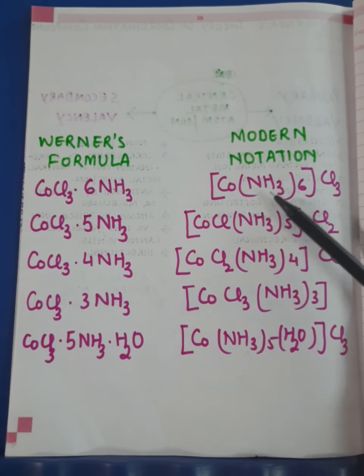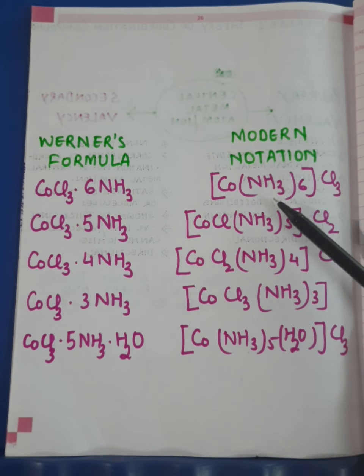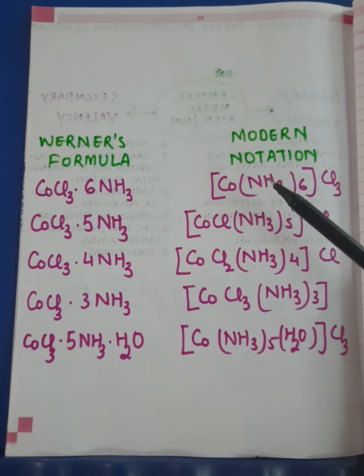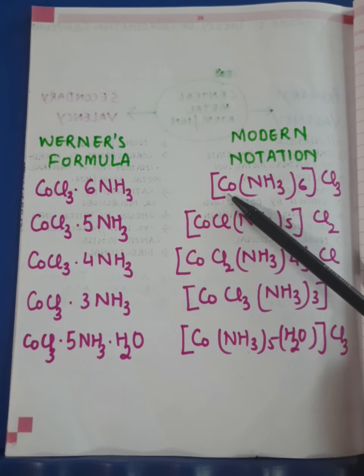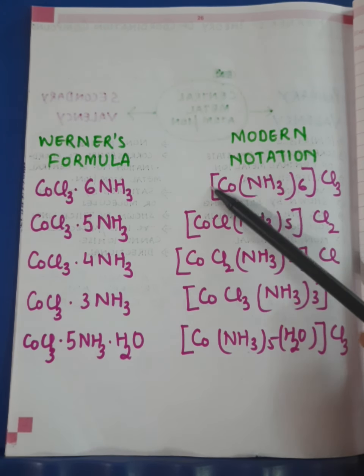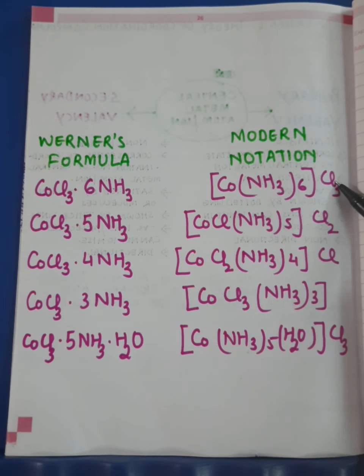In modern notation, the negative ions, molecules, or atoms bonded to the central metal atom or ion via secondary valency — which is unionizable — are together enclosed in a square bracket. The negative ions bonded via primary valency, which is ionizable, are represented outside this square bracket.